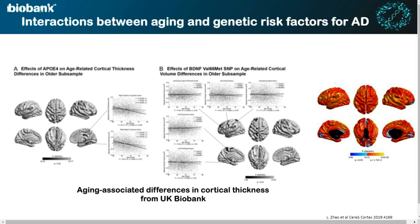This is clearly important for dementias, because aging-associated differences in cortical thickness have been one of the early things shown to be really powerful. When one can do this across ages at this scale, one can begin to make associations with specific genetic risk factors. For example, one can see associations with APOE4 — the genetic risk factor of highest effect for Alzheimer's disease — as well as, on the other hand, looking at factors such as BDNF polymorphism variation that could drive modulation of this.